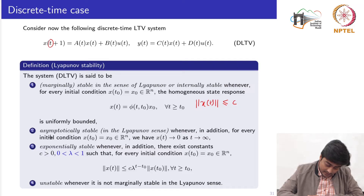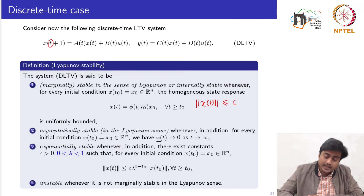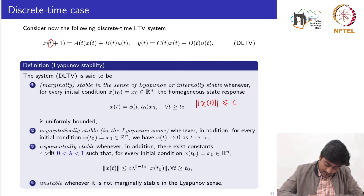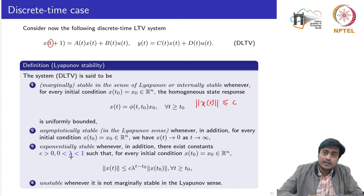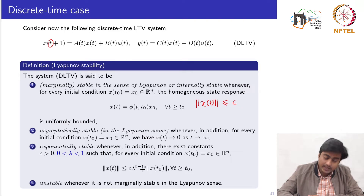The second definition says the system is asymptotically stable in the sense of Lyapunov whenever, in addition to the first statement, for every initial condition x₀ we have x(t) approaching 0 as t tends to infinity. The third definition says the system is exponentially stable whenever there exist positive constants c and λ, with the additional condition for discrete time that λ must be less than 1, such that the norm of x(t) ≤ c·λ^(t−t₀) times the norm of x(t₀).